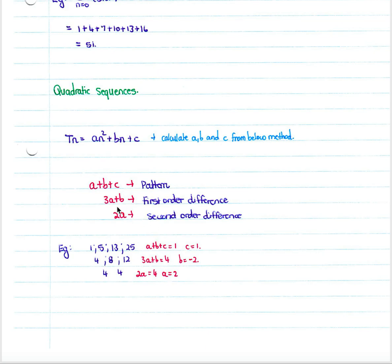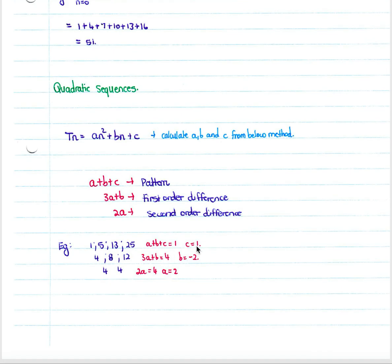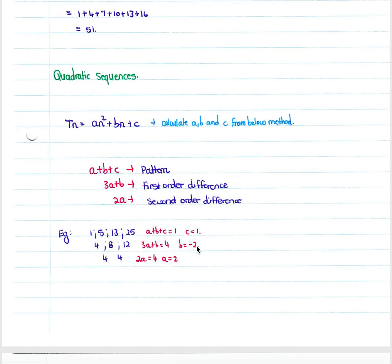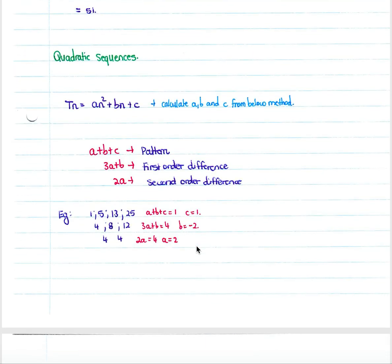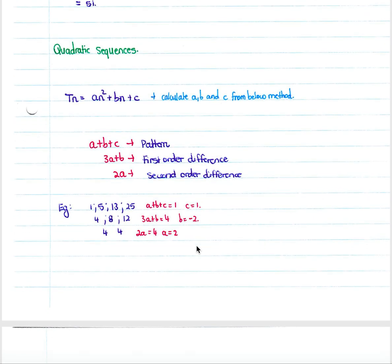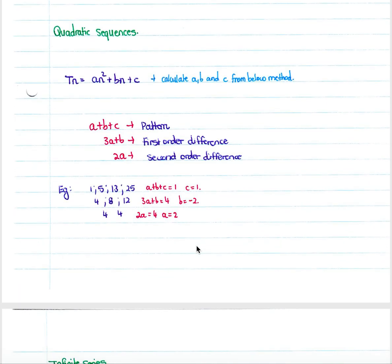With a equals 2, move to the first order difference: 3 times 2 plus b equals 4, so b equals negative 2. Then from a plus b plus c equals 1, substituting a equals 2 and b equals negative 2, we solve for c and get c equals 1. So the quadratic formula for this sequence is tn equals 2n squared minus 2n plus 1.